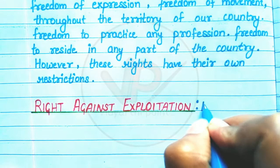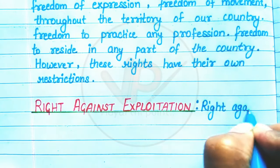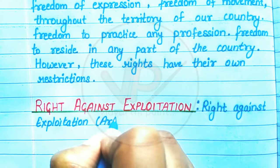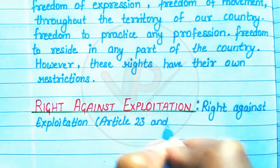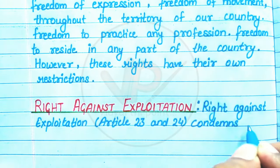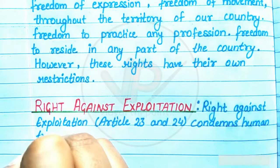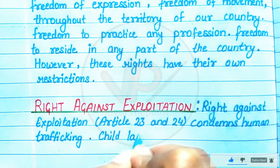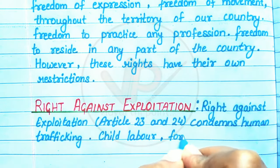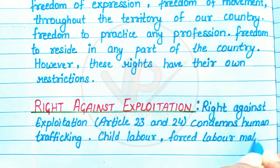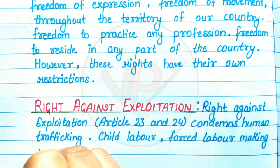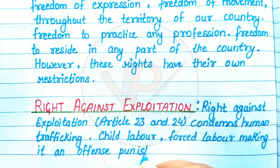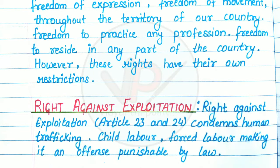The third is the Right Against Exploitation, under Articles 23 and 24. It condemns human trafficking, child labor, and forced labor, making them offenses punishable by law.